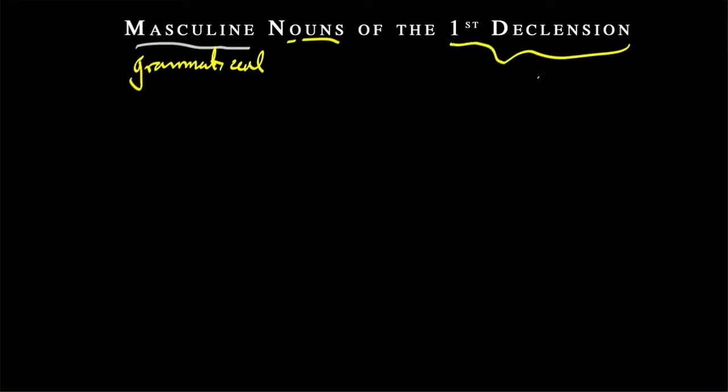But first declension, remember, we learned these in our chapter 4 of Shalmerdine's text, tended to be feminine. So, these are some masculine exceptions to the rule. These are actually fairly rare as far as Greek goes, but it's important that you learn them and it's easy to learn them early on.